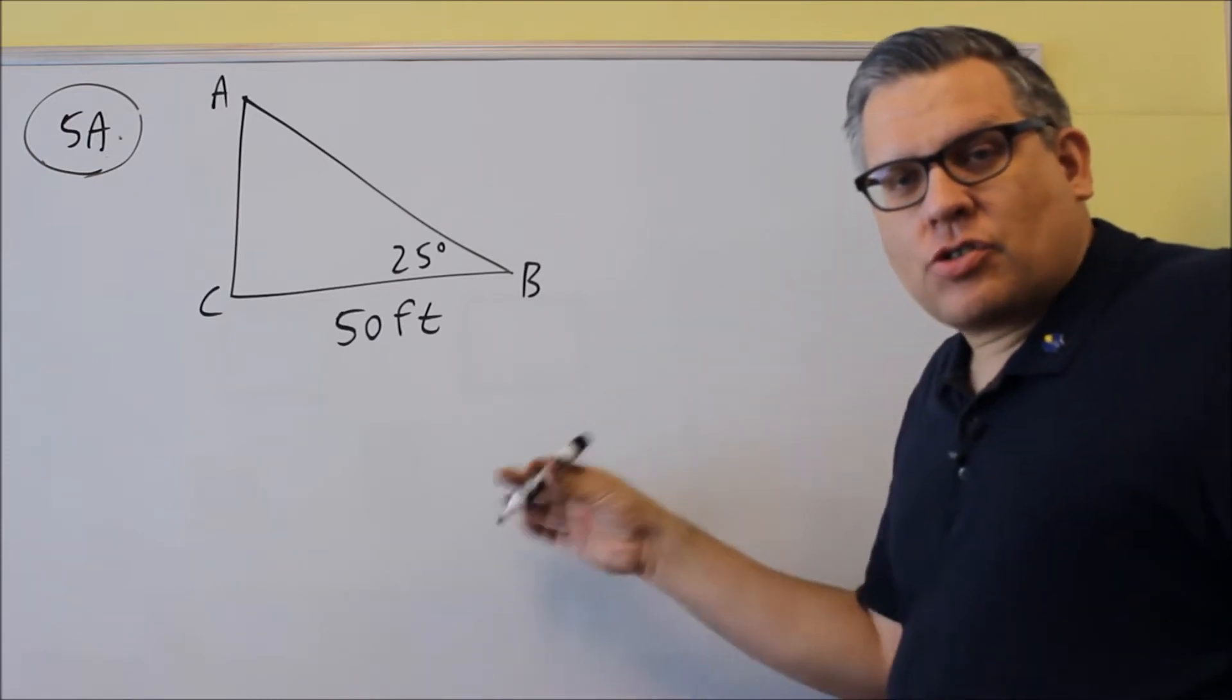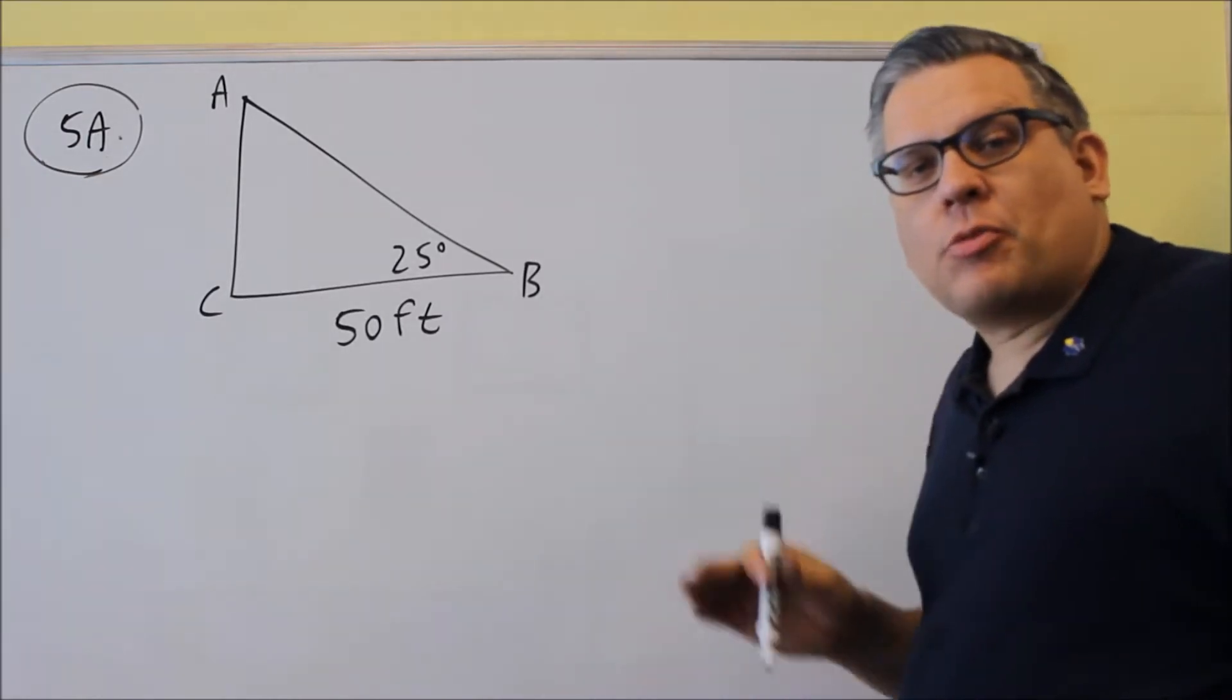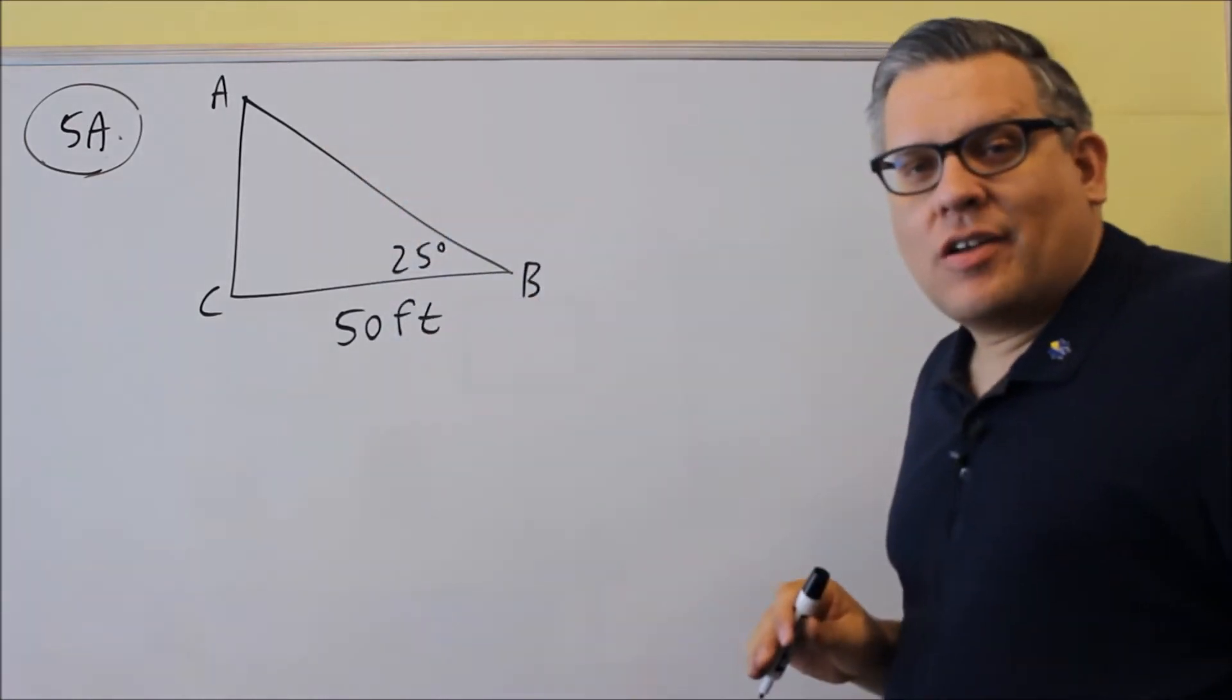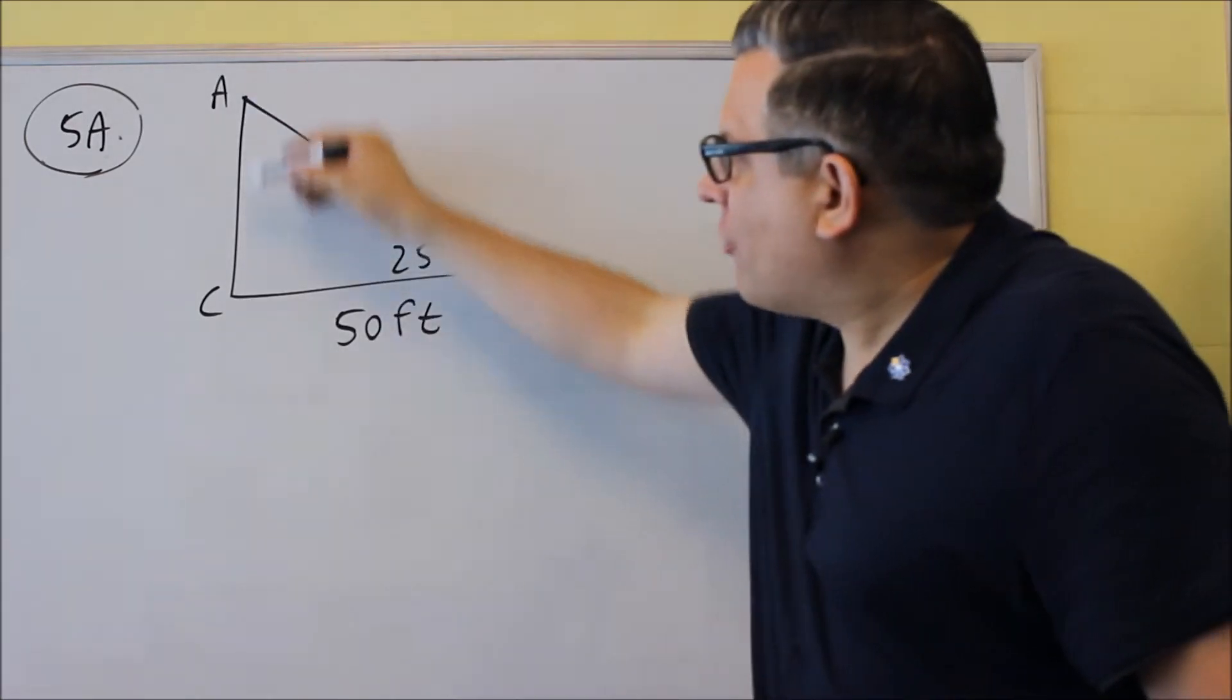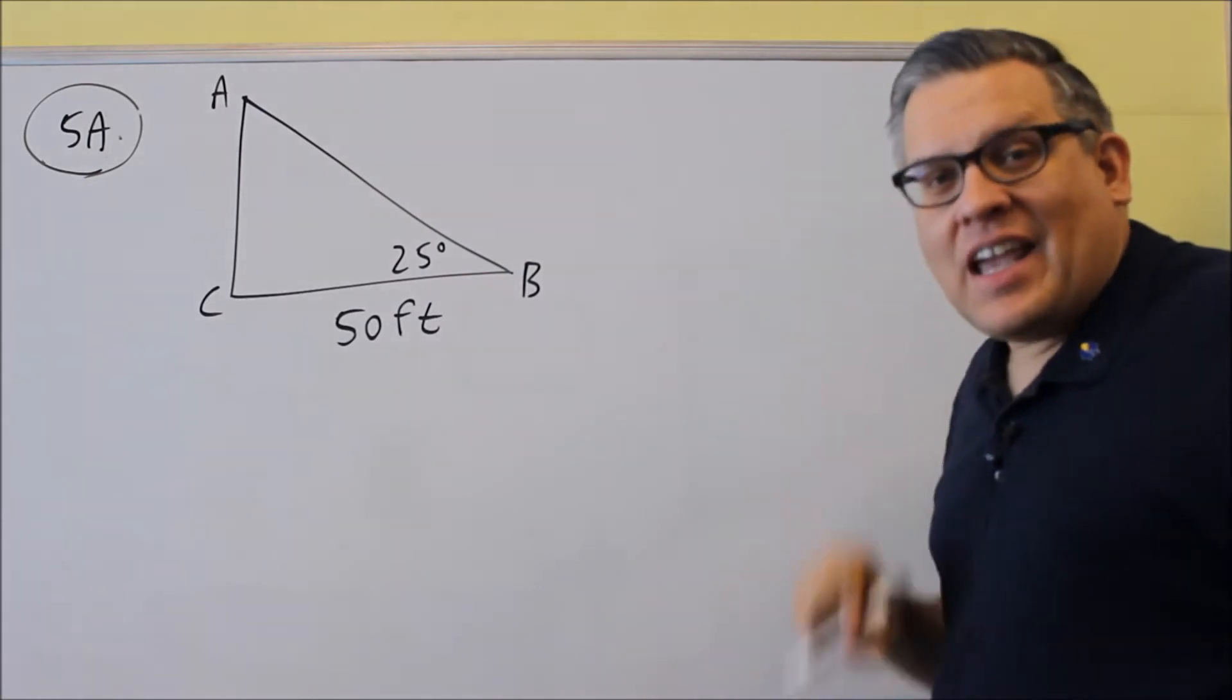Just pay close attention to what side they're asking to find. That's where people make the most mistakes - finding the wrong side. On the test it says they want you to find the distance from A to C.